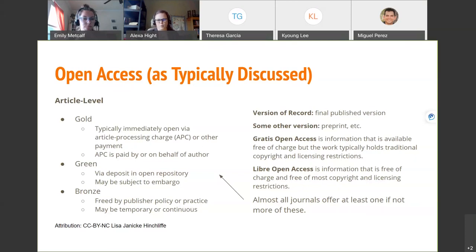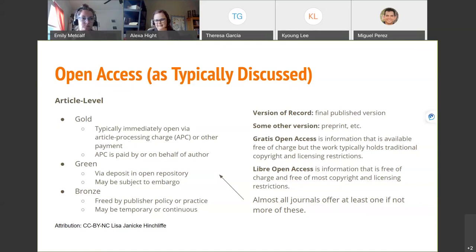Going back to green open access — when you deposit your work in an open repository, publishers often stipulate what version of your work can go in. Sometimes it's the final published version with all peer review edits and copy editing. Sometimes they stipulate you can only put in a preprint — and the definition of preprint can vary by publisher. Emily and I are more than happy to help you find what version your publisher allows, and we have a handy tool for that.